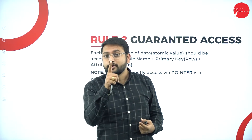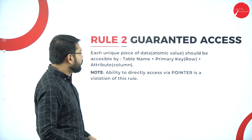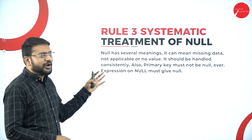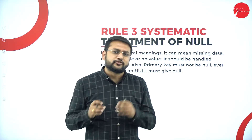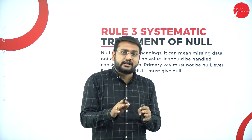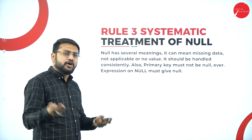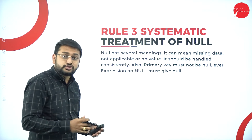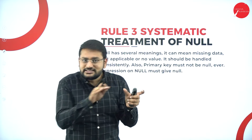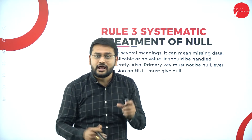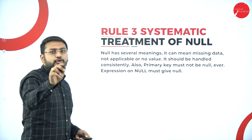The fact that I have stored data doesn't mean I shouldn't be able to access it — whatever you store, you should be able to access it. That is Rule Number Two. Rule Number Three is Systematic Treatment of Null. We give different meanings to null — sometimes absence of data, sometimes used for a primary key. That inconsistency shouldn't happen; the meaning of null must be consistent at all times.